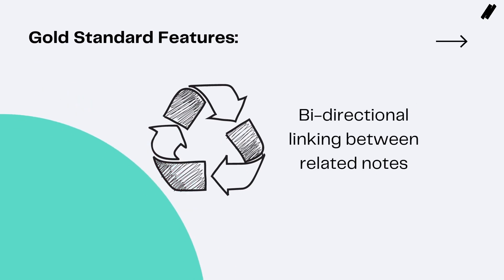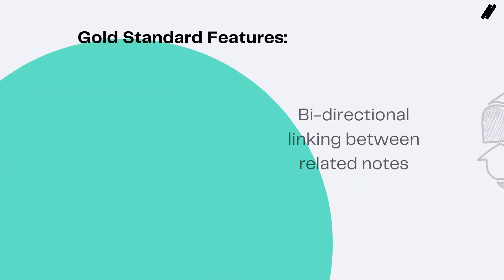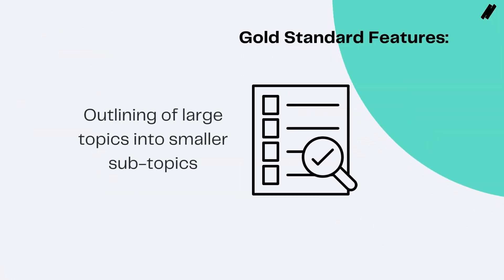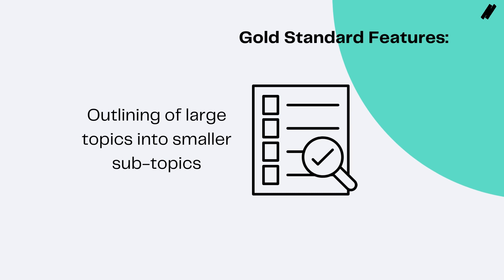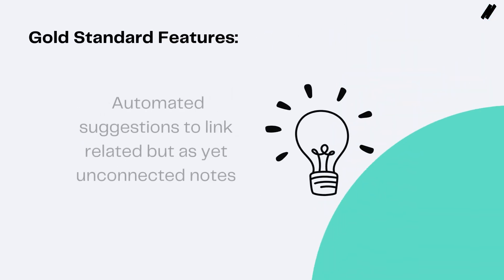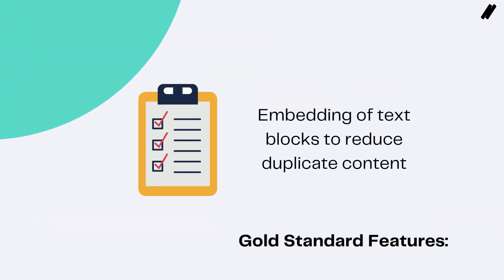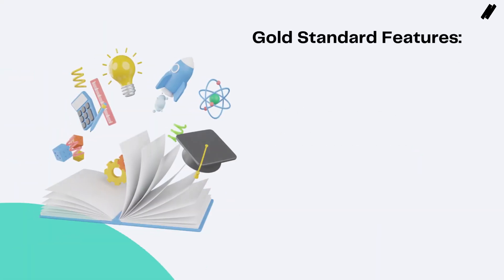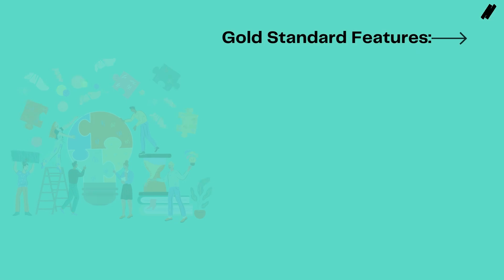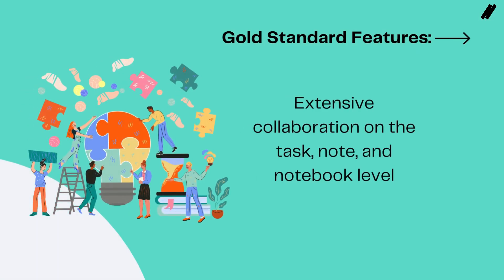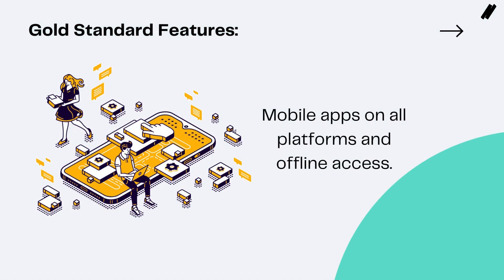Bi-directional linking between related notes. Outlining of large topics into smaller subtopics. Automated suggestions to link related but as yet unconnected notes. Embedding of text blocks to reduce duplicate content. Knowledge graph for better discovery. Extensive collaboration on the task, note, and notebook level. Mobile apps on all platforms and offline access.